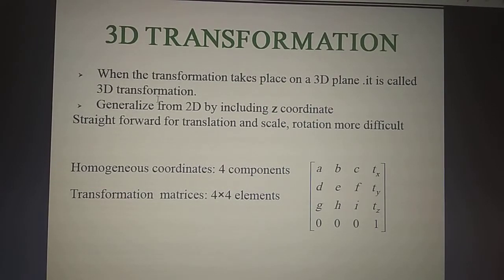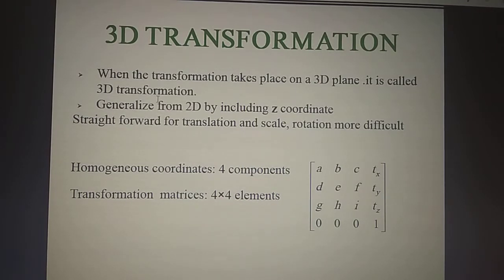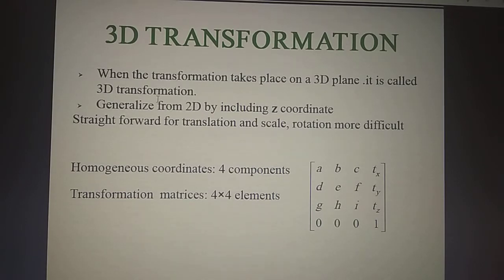We will see 3D transformations now. We have already seen that 2D does not include the Z coordinate — it is specific to 3D. If we consider translation, it is straightforward. But scale and rotation are more difficult because in 2D only X and Y change, while in 3D we also have to consider Z. For homogeneous coordinates, similar to 2D, in 3D we need a 4×4 matrix.